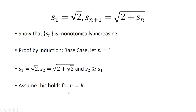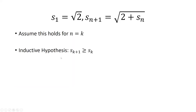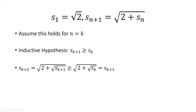Now we assume that this holds for n equals k. Our inductive hypothesis is that s_{k+1} is greater than or equal to s_k. Now we consider k plus 1, replacing n with k+1. So we have s_{k+2}, which equals the square root of 2 plus the square root of s_{k+1}.